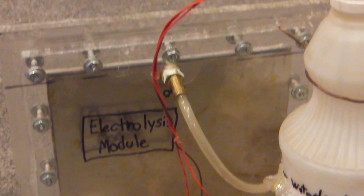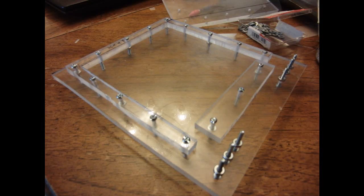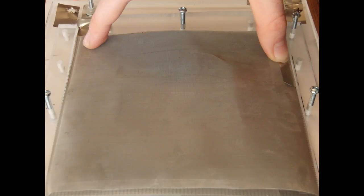Electricity running through six metal plates inside the electrolysis module splits the water into hydrogen and oxygen.